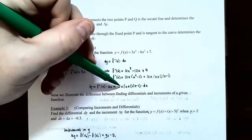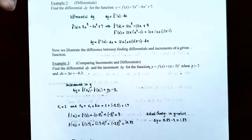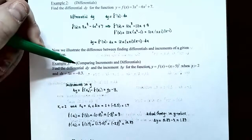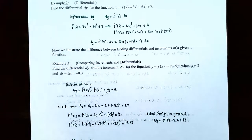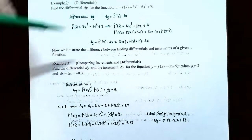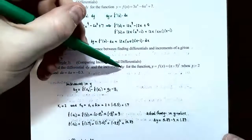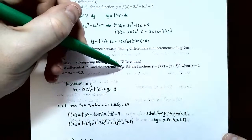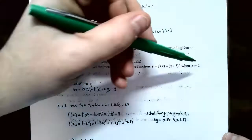Example 3 — Comparing Increments and Differentials: Find the differential dy and the increment delta y for f of x equals (x minus 5) squared when x equals 2 and dx equals delta x equals negative 0.3. This asks us to calculate the actual change in y values when the x values change by negative 0.3 starting at x equals 2. So x1 is 2 and x2 is 2 plus (negative 0.3), which is 1.7.